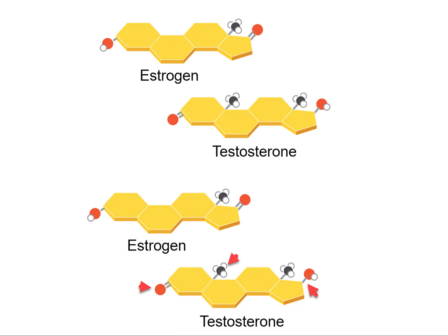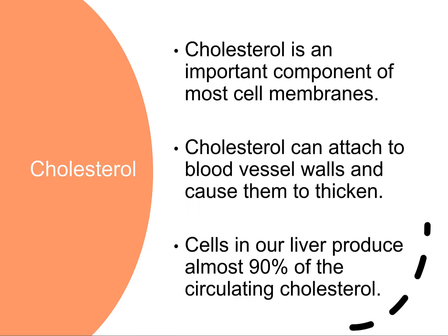Testosterone flips switches for secondary sex characteristics, as estrogen does in women — and it's only those small molecular differences that make this happen. Cholesterol is an important component of cell membranes; it can attach to blood vessel walls and cause them to thicken, which is not good. Our cells in the liver produce about 90% of circulating cholesterol.